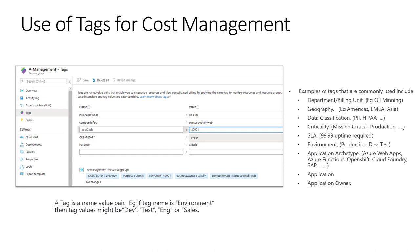For example, on five different resources it might have values like dev, test, engineering or sales. What tags you use depends on your business and technical requirements. There is a maximum of 50 tags per resource, so don't go crazy and we suggest you leave room for later additions. We do suggest you always tag resources with owner, cost center and department. On the right-hand side of this slide you can see some other examples of tags that are commonly used.